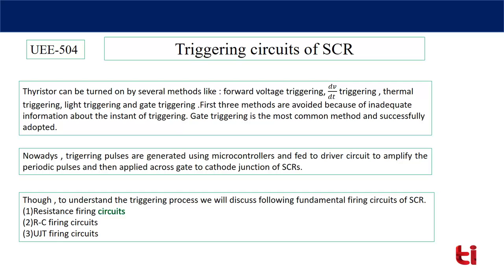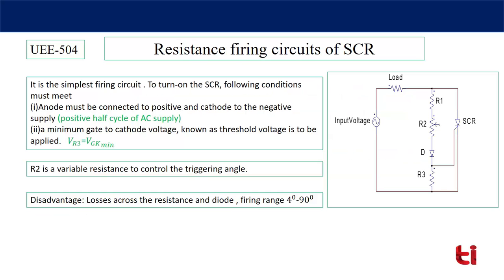Let's start with the resistance firing circuit — this is the simplest firing circuit. To turn on the SCR, the anode must be connected to positive and cathode to negative, which is available in the positive half cycle. The second condition is that a minimum gate-to-cathode voltage is required, known as the threshold gate-to-cathode voltage.